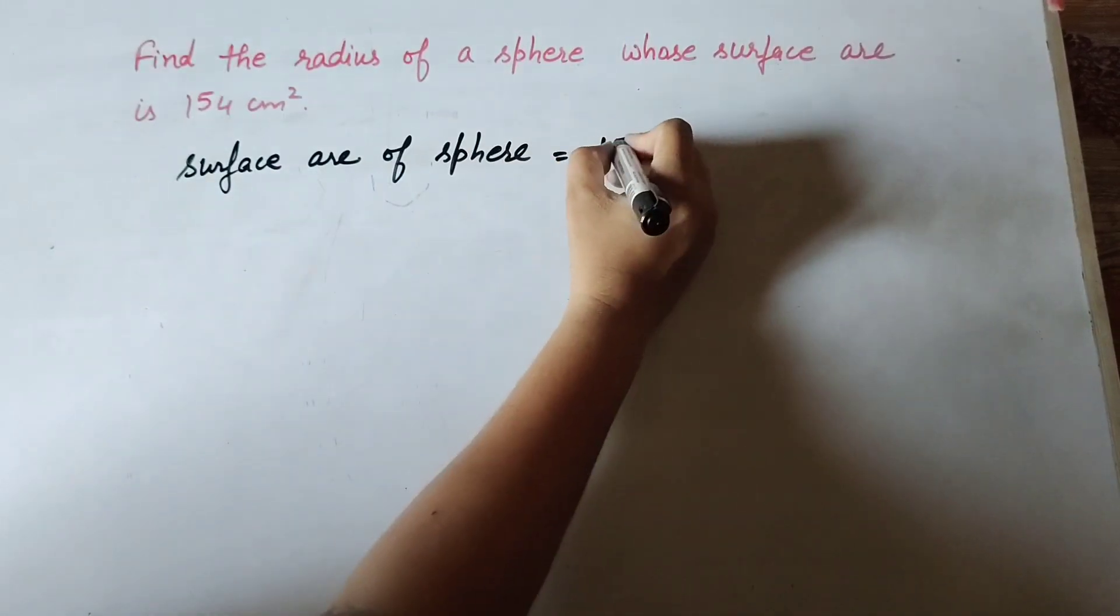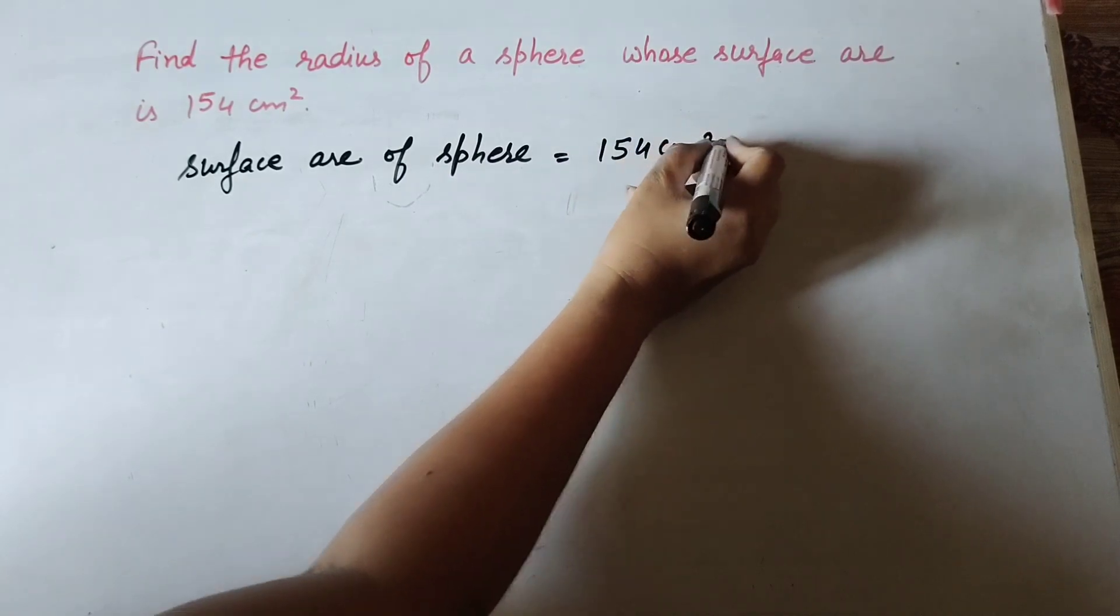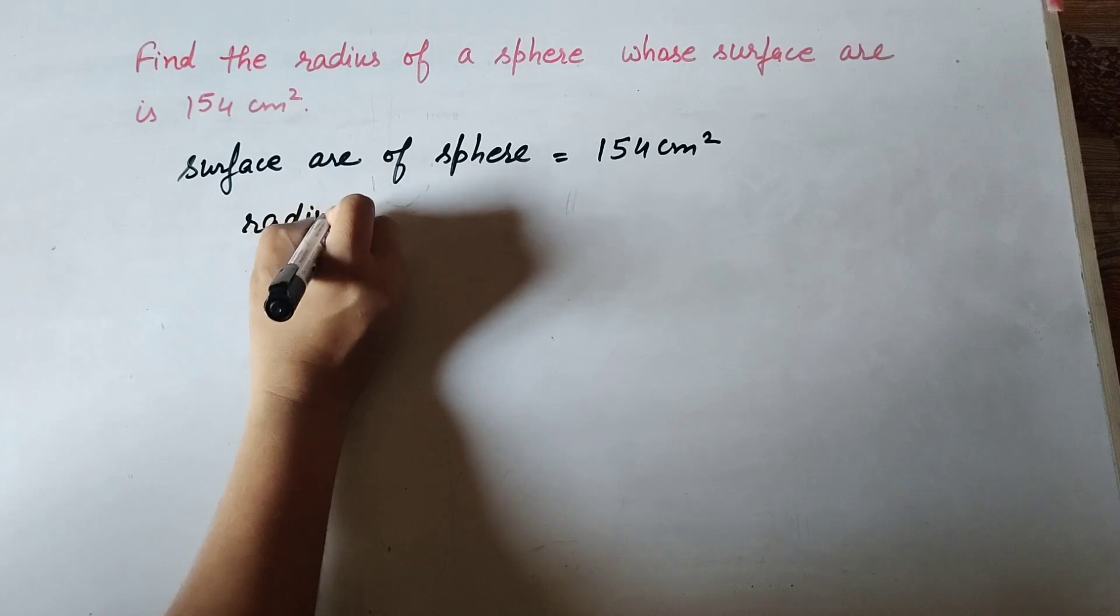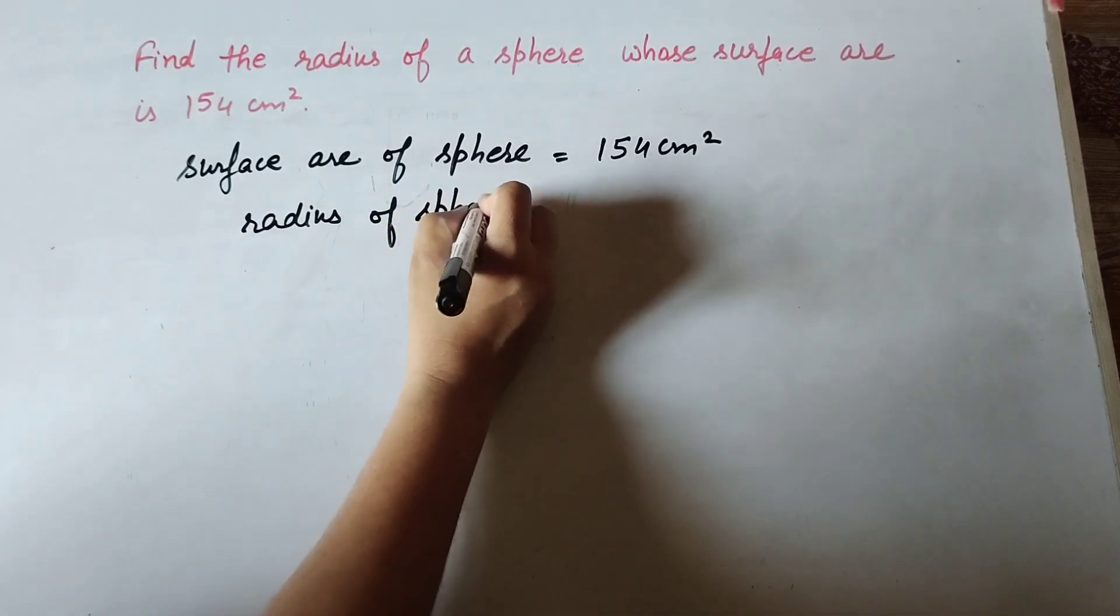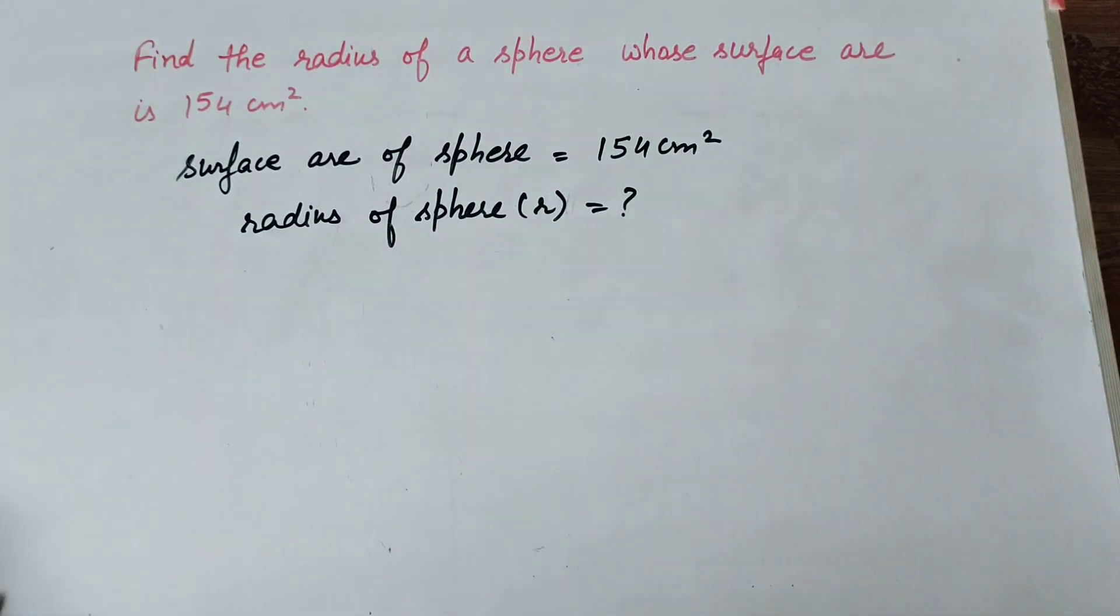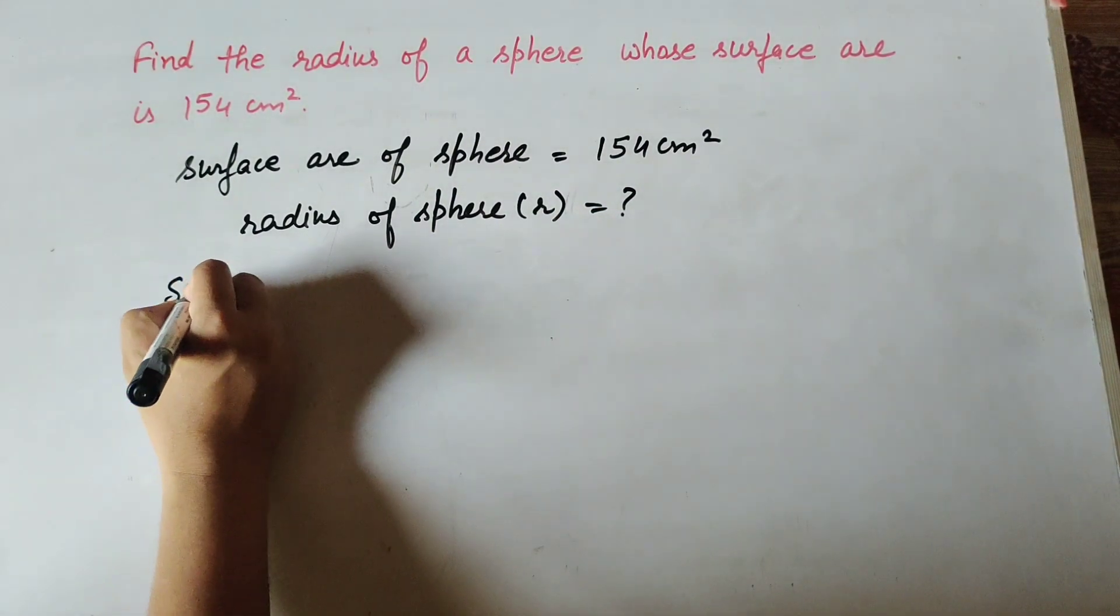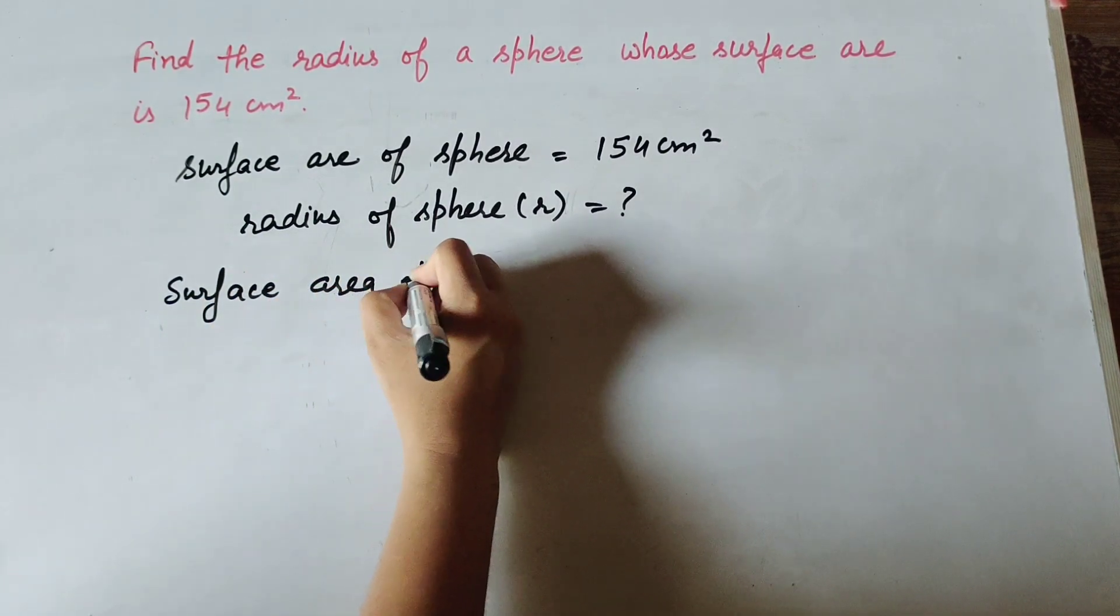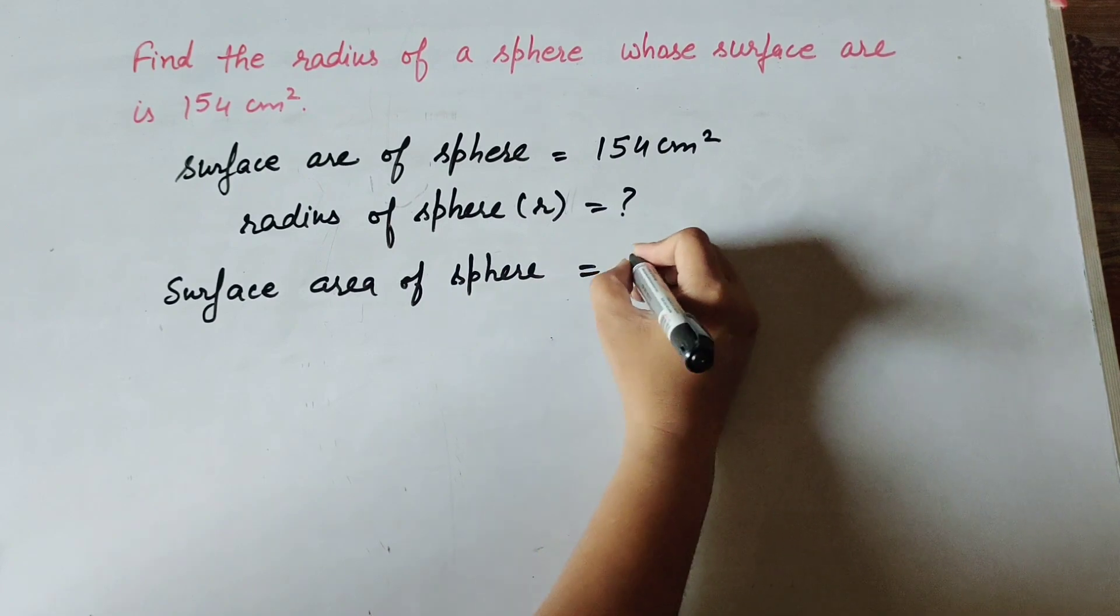equal to 154 centimeters square and we need to find the radius of sphere, r. We know the formula to find surface area of sphere, it is equal to